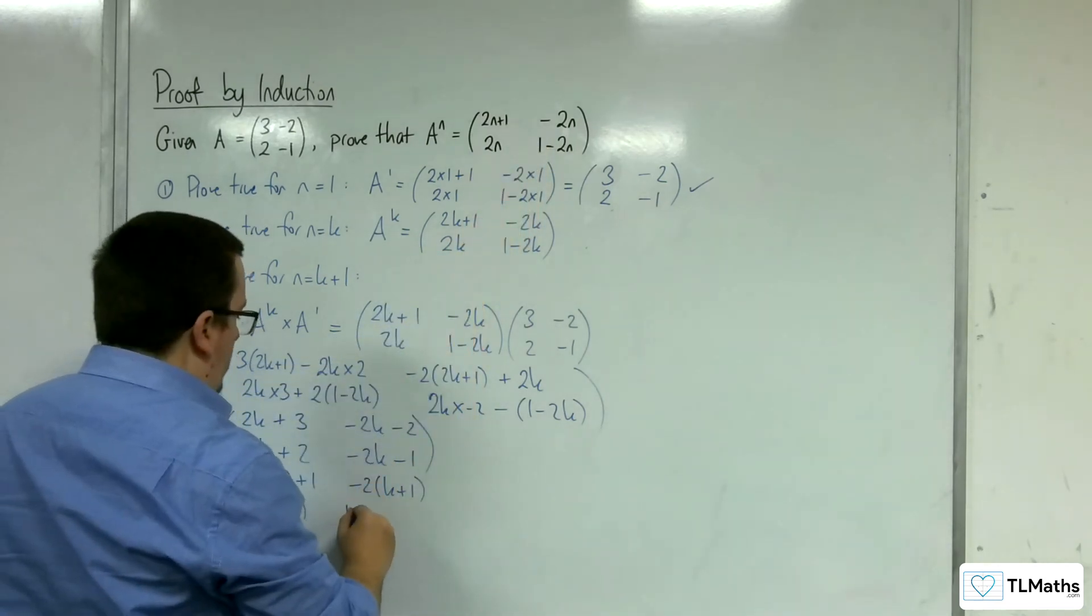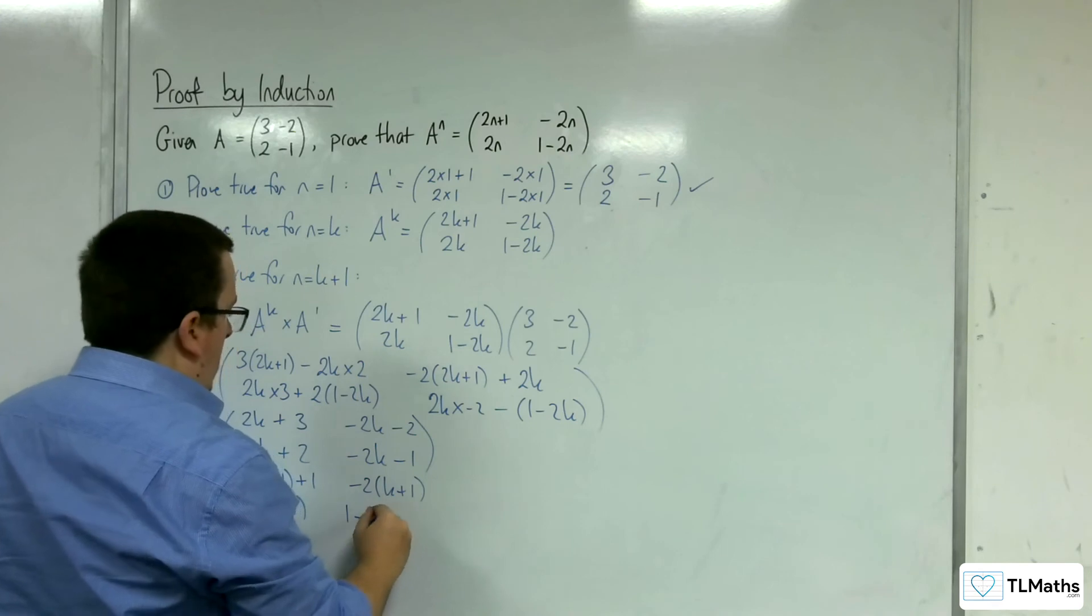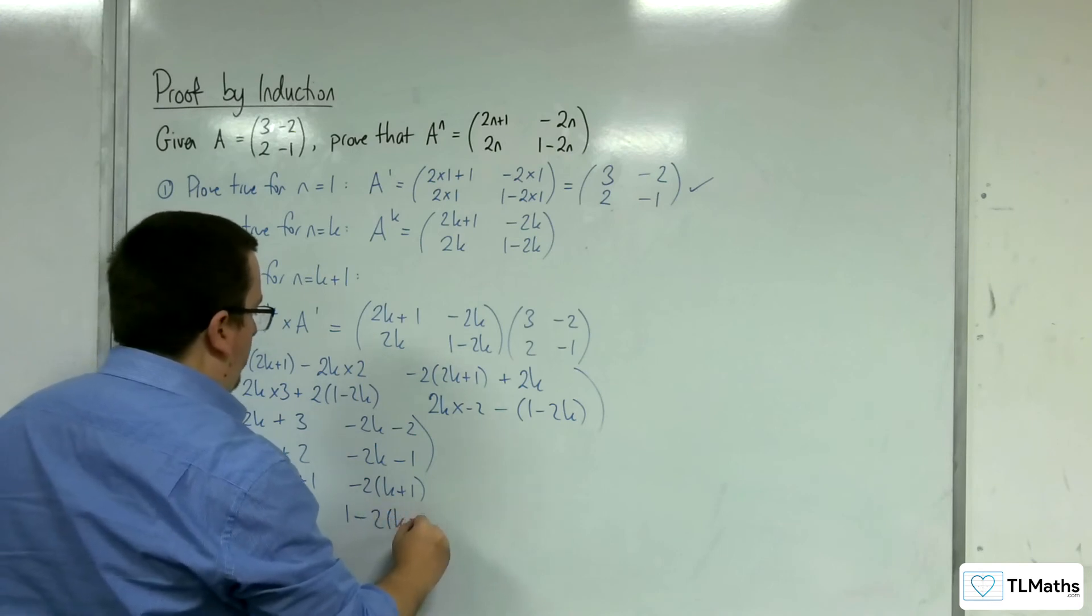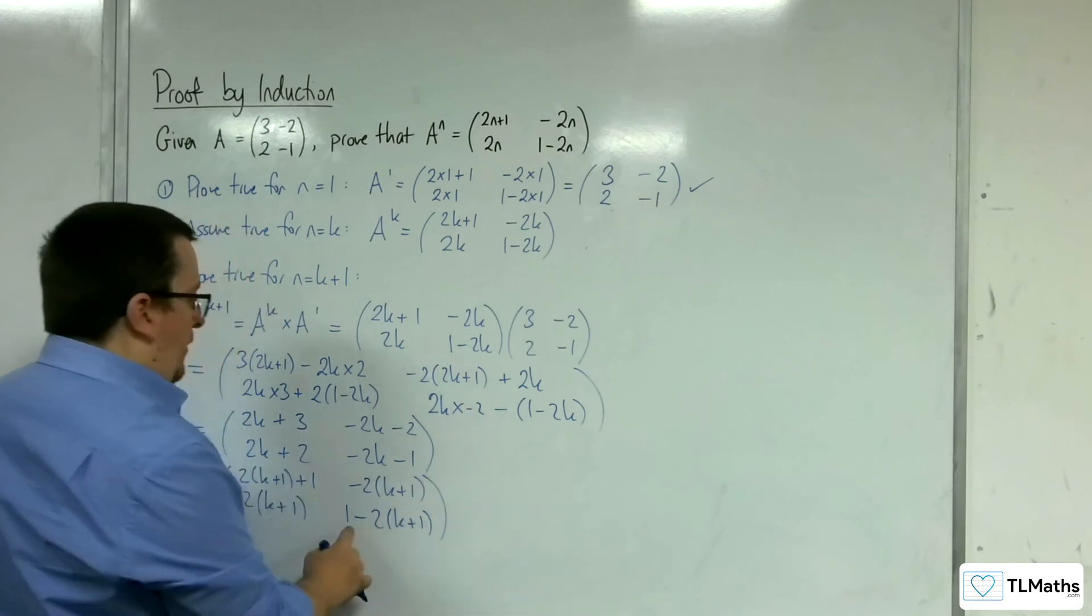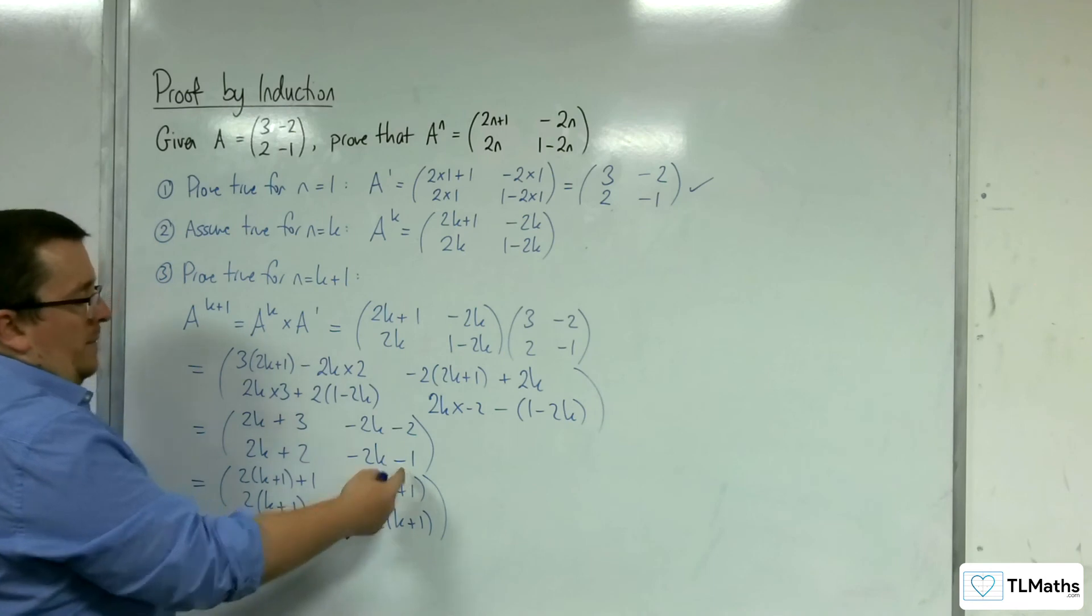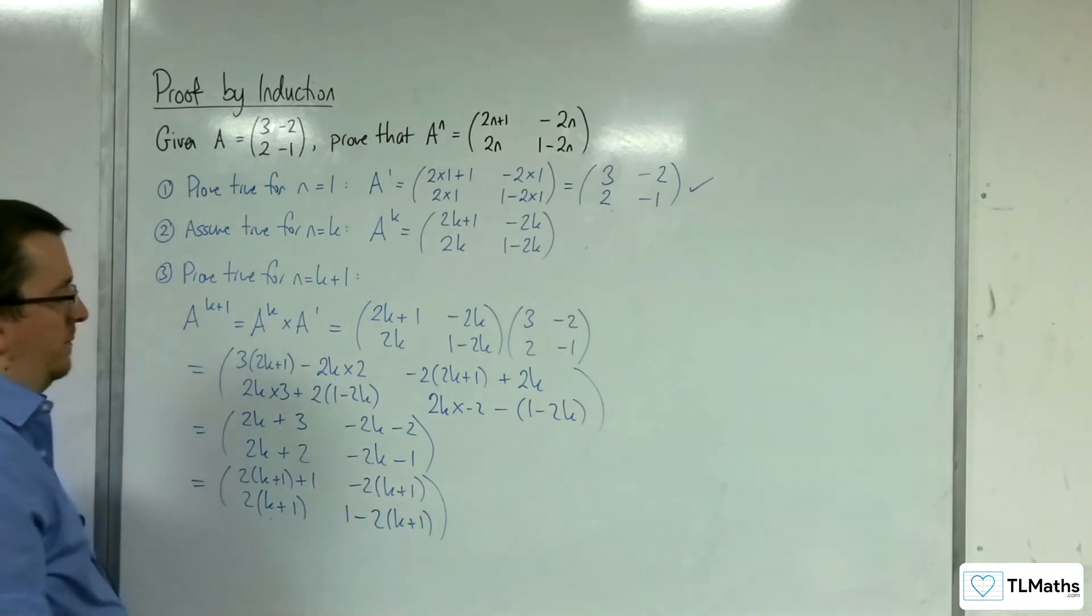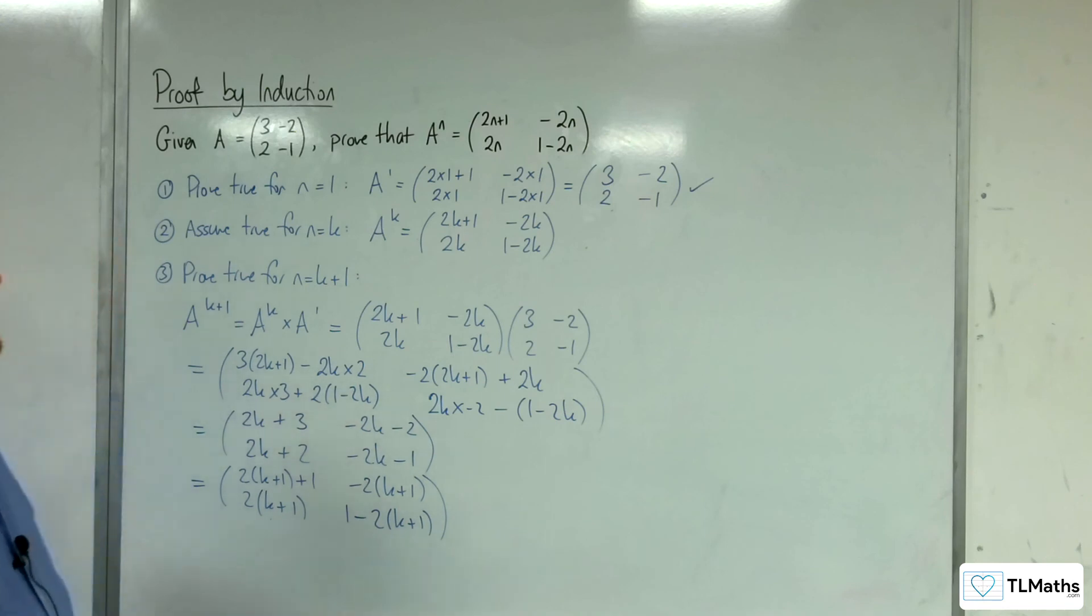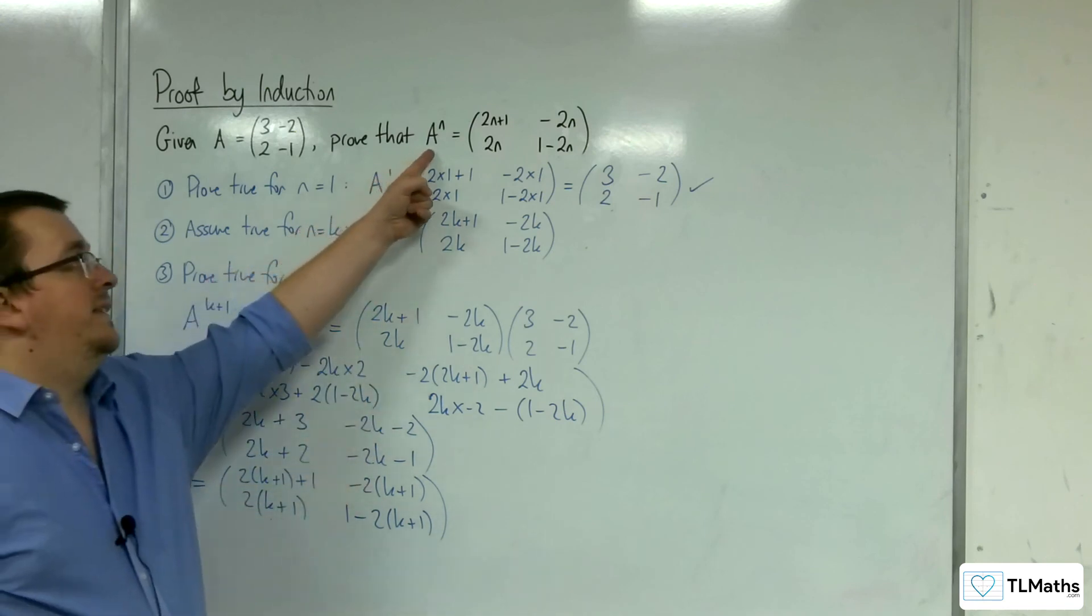Here I've got 1 take away 2 lots of k+1, because I get 1 take away 2k take away 2, 1 take away 2 minus 1, and I've got the -2k there as well. So that is exactly what I wanted to arrive at, because that is A^(k+1).